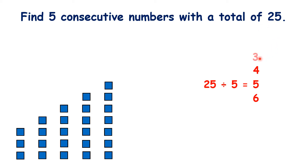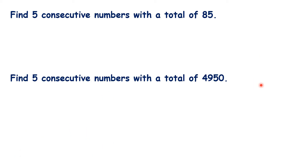Our first number is 3, so 2 less than our middle number. Then we have 4, so 1 less than our middle number. Then 5 is our middle number. 6 is 1 more than our middle number. And our last number is 7, which is 2 more than our middle number. We can use the same method to find five consecutive numbers with any total.